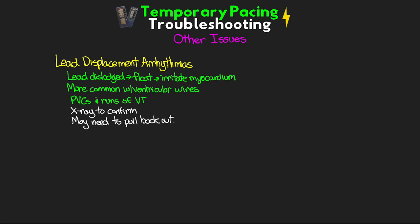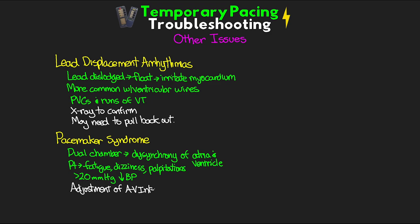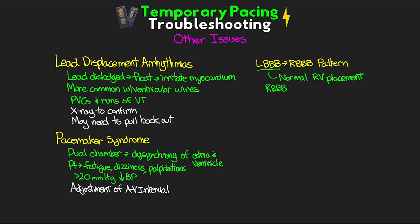Another potential issue is pacemaker syndrome: in dual-chamber pacing, dyssynchrony of atrial and ventricular contractions can cause the patient to experience fatigue, dizziness, palpitations, presyncope, and a reduction in blood pressure greater than 20 mmHg. This may require adjustment of the AV interval. Also, watch for a transition from a left bundle branch block QRS pattern — normally seen with RV placement of a ventricular lead — to a right bundle branch block pattern, which could mean the lead has eroded through the interventricular septum, leading to left ventricular initiation. Get an x-ray to confirm; fortunately, this is pretty rare.